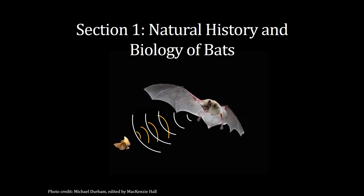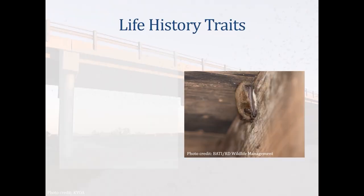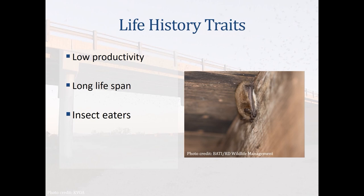Bats are mammals and unique in the Mammalia class in that they are capable of flight. Most bats of North America share similar life history traits. They have low productivity, typically having only one to two young per year, and a long lifespan of usually 12 or more years. Most North American bat species are insect eaters, with a few species in the Southwest and South Florida that eat fruit or cacti. Most hibernate during the winter months in colder climates when food resources are lower, yet some bat species do not hibernate at all.